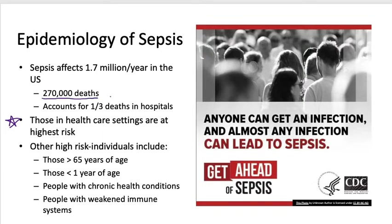Sepsis accounts for far more deaths than any other type of bacterial infection. In all hospital deaths, one out of every three is because of sepsis and septic shock. High-risk individuals include those in healthcare settings, especially those over 65 years of age and those less than one year of age who haven't built up a proper immune system yet. People with chronic health conditions or weakened immune systems are also at high risk.